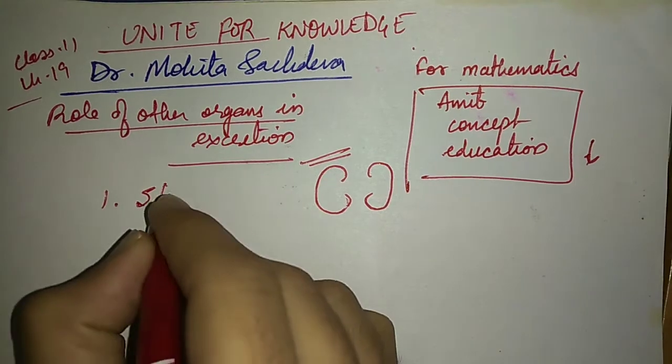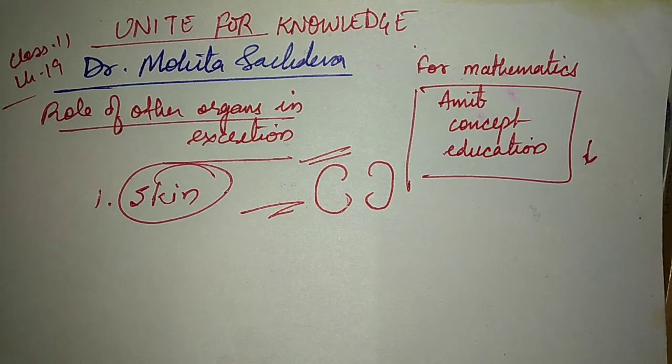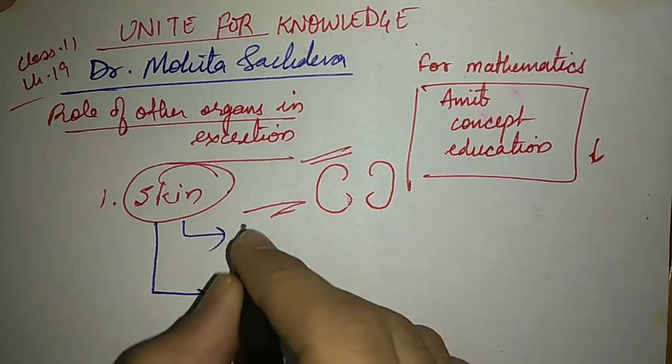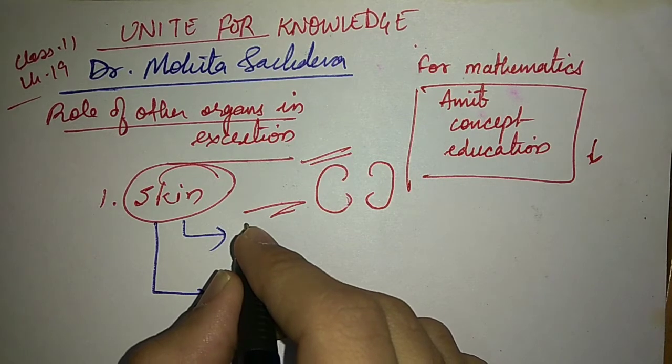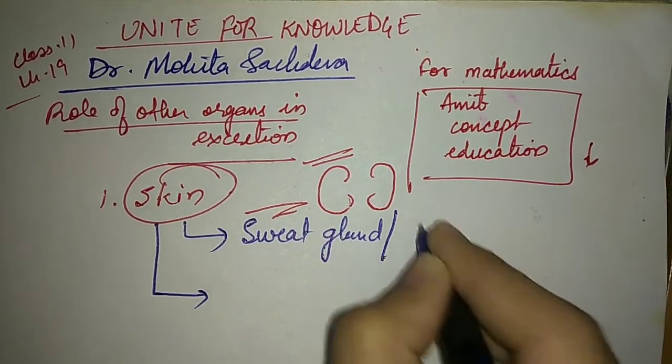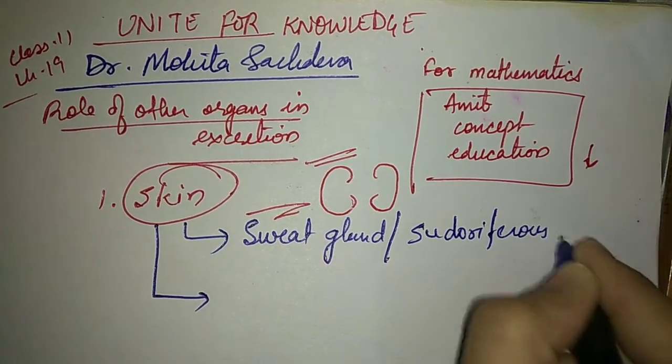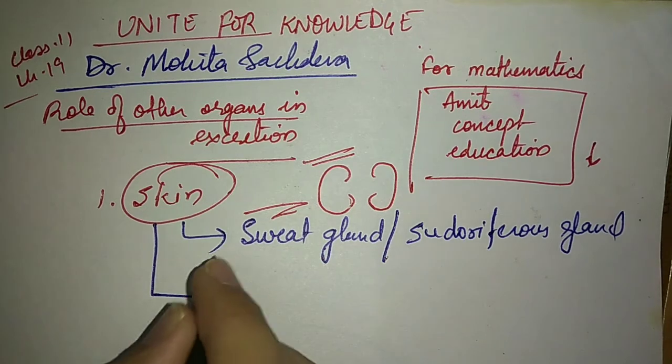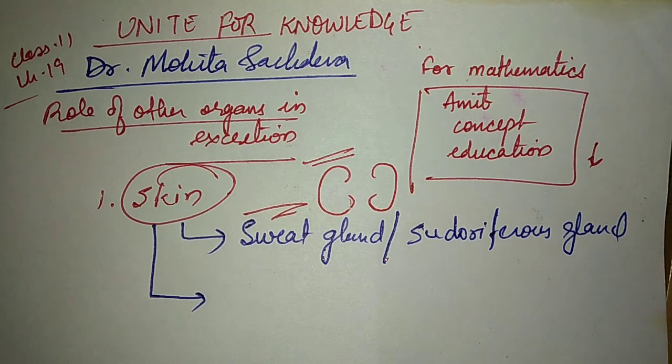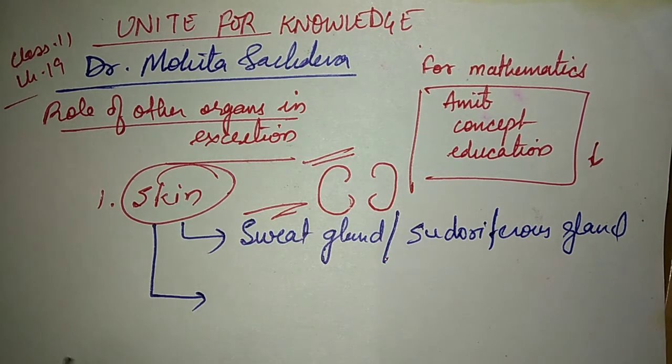First of which is skin. Skin is helping in excretion. There are two types of glands present in the skin. First of which is sweat gland, which we also call sudoriferous gland. It will produce sweat or perspiration.